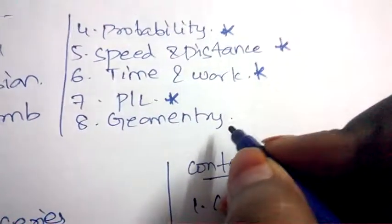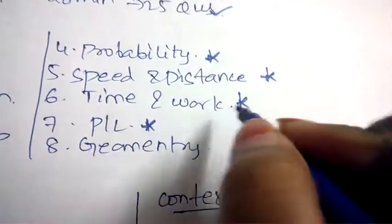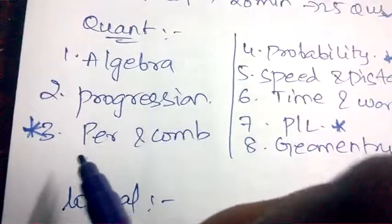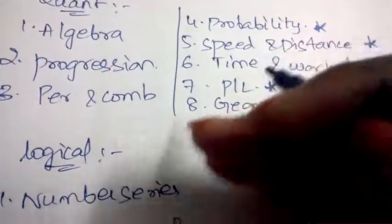Out of which profit and loss, time and work, speed and distance, probability, and permutation and combination are important. These are the five topics you need to concentrate more on because they'll be asking advanced and harder questions from these topics.